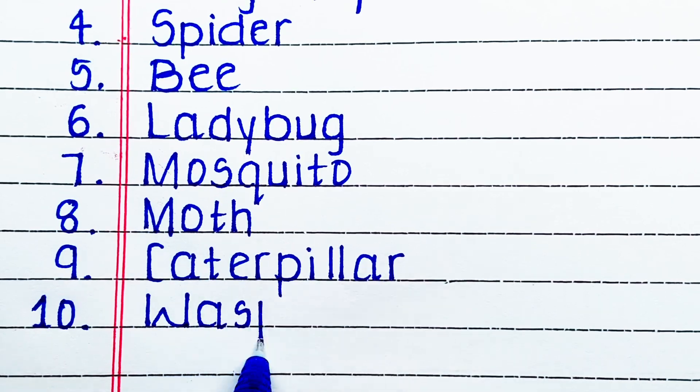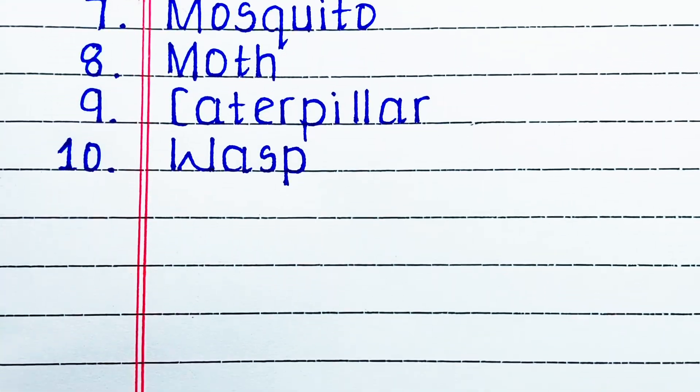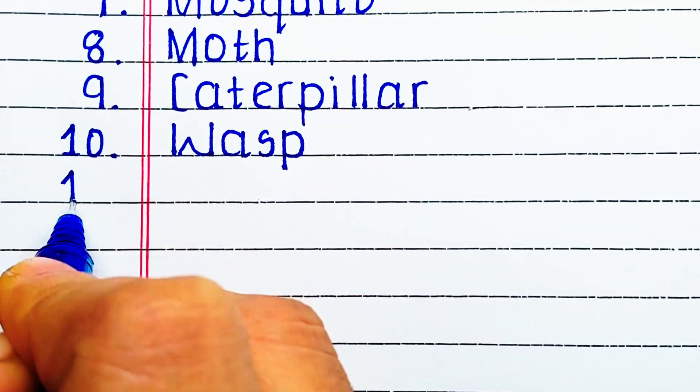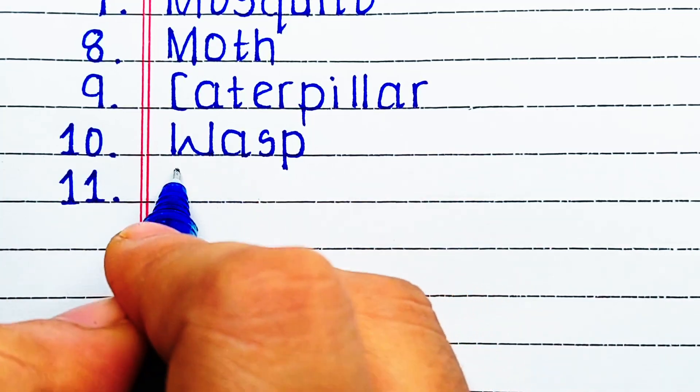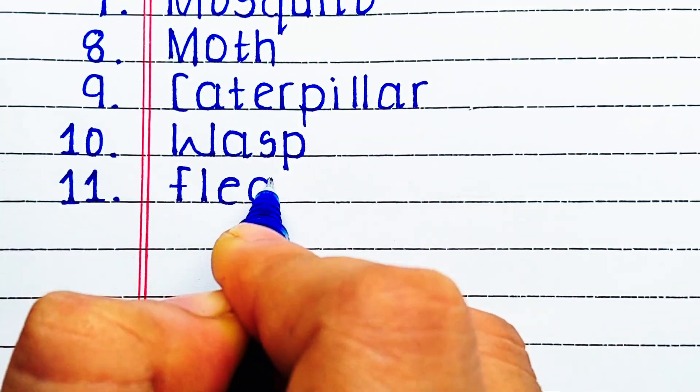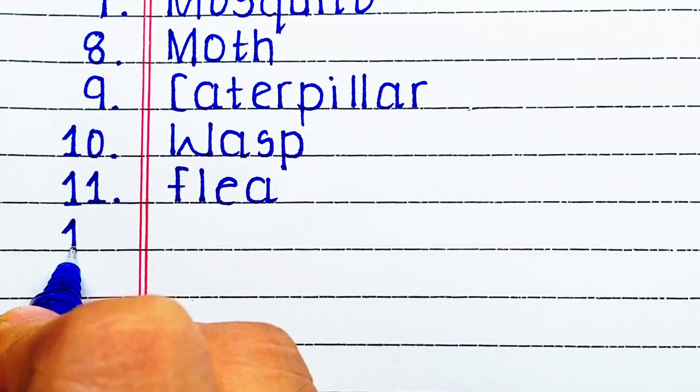Next insect in our list is C-A-T-E-R-P-I-L-L-A-R, caterpillar. Next is W-A-S-P, wasp.